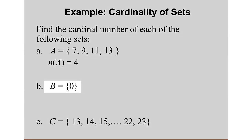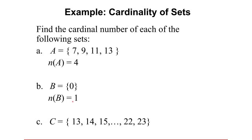What about B, which is the set containing only 0? How many distinct elements do you see inside the set? It's only 1. So N of B is equal to 1.